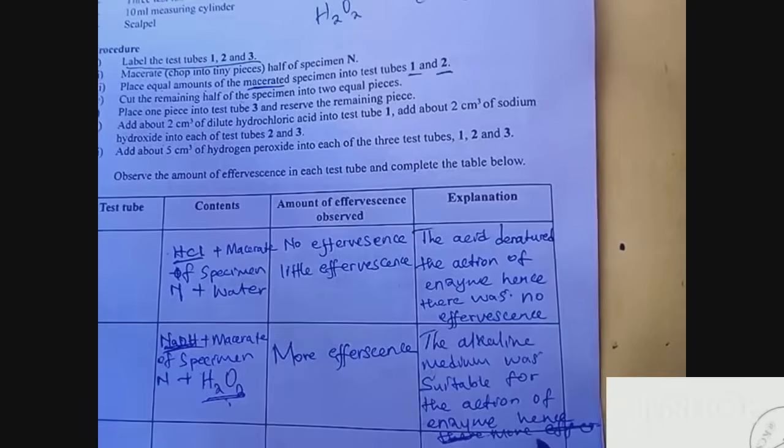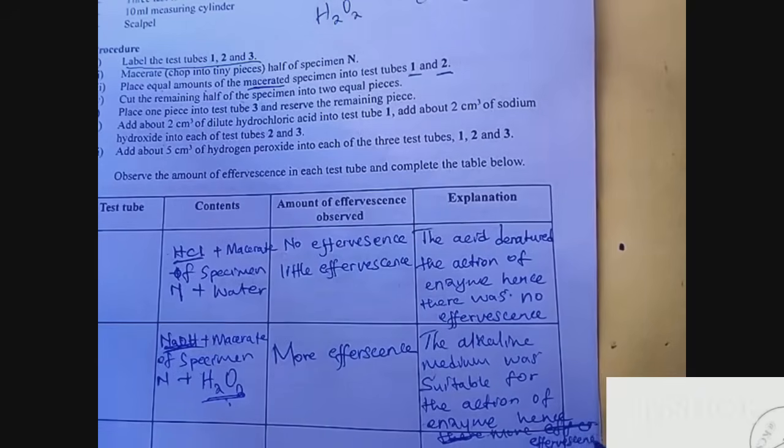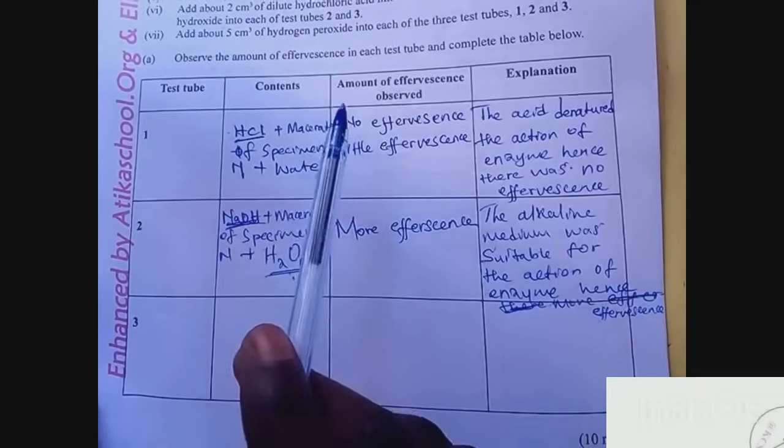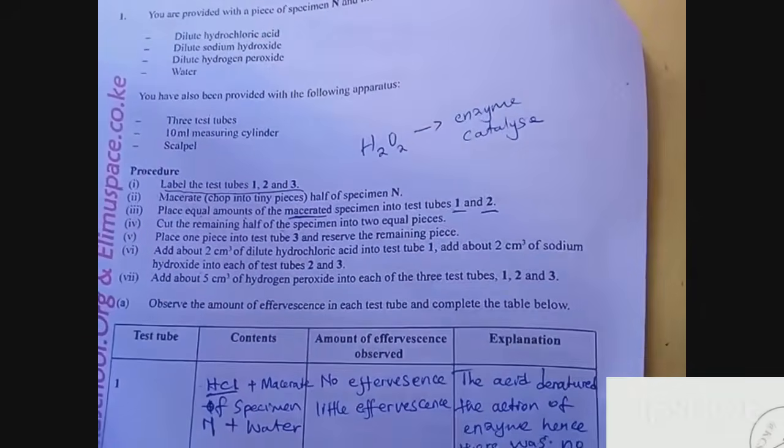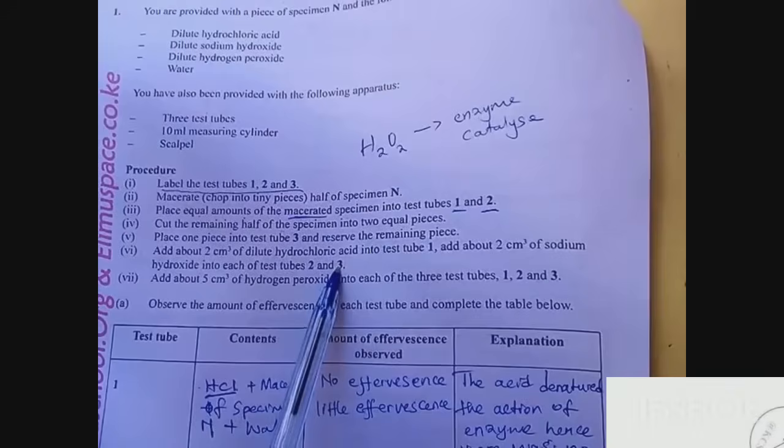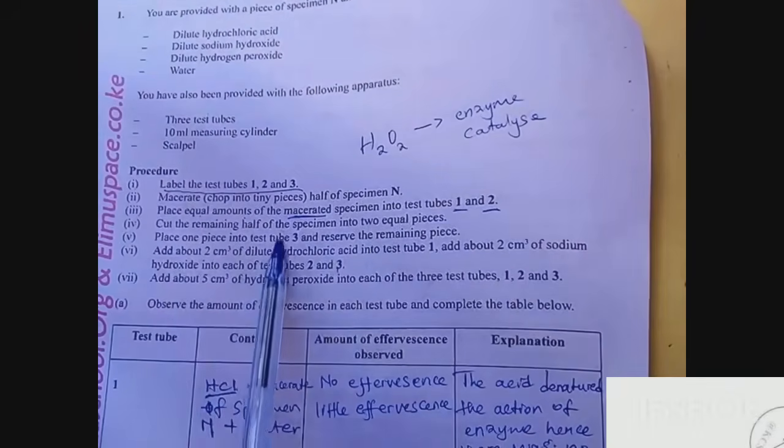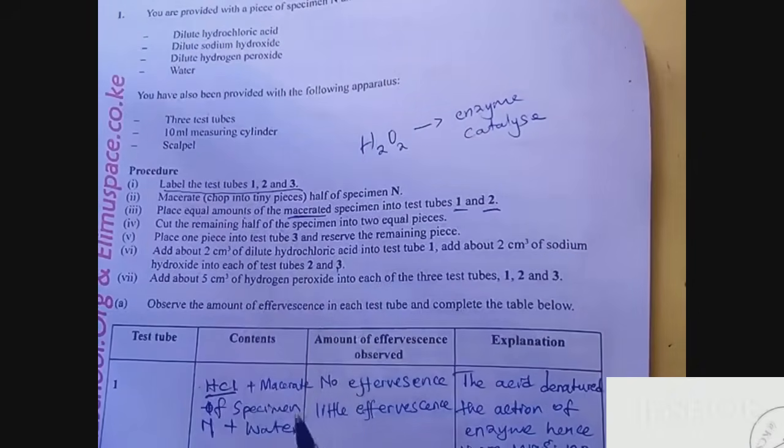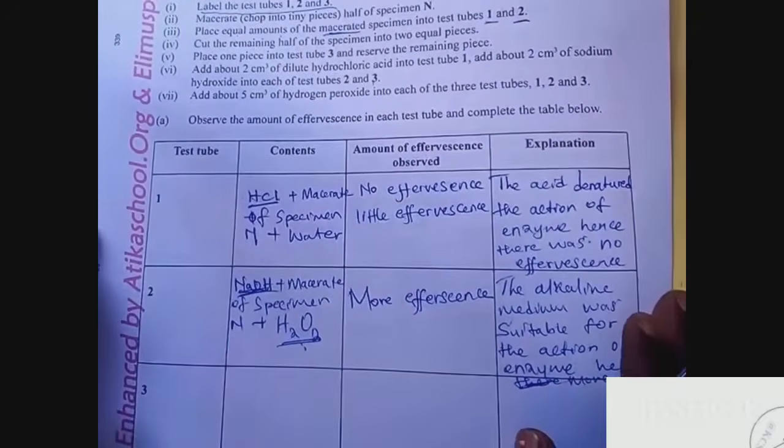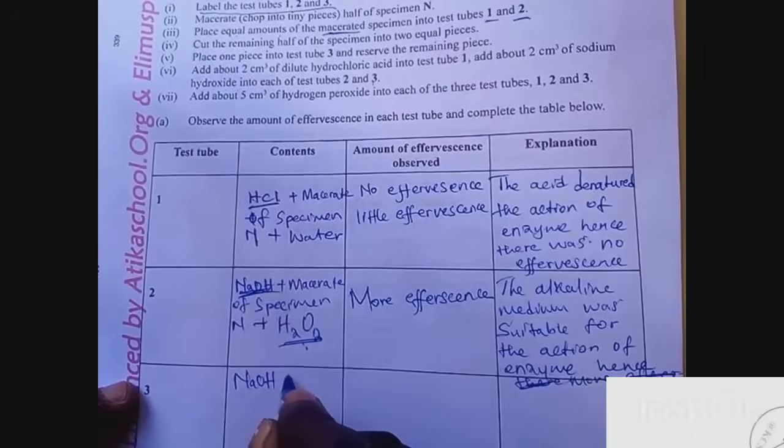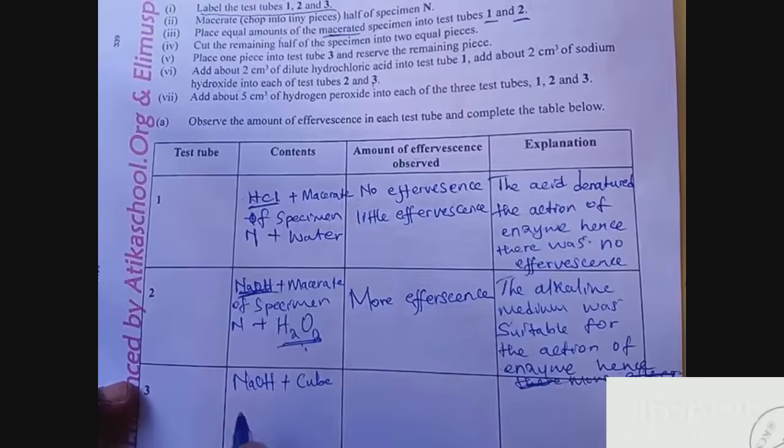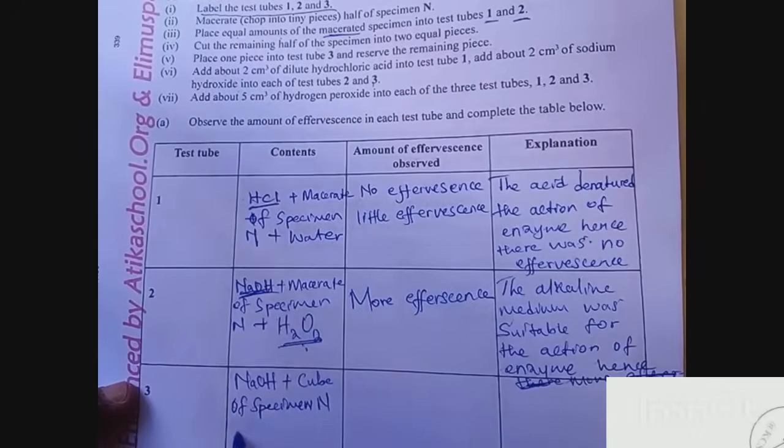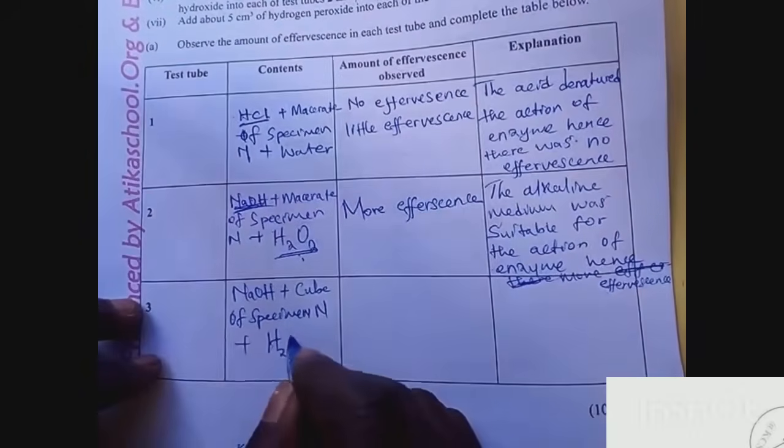Let's go to test tube 3. In test tube 3, you are told you add sodium hydroxide and then place one piece of the specimen in the test tube and reserve the remaining piece. The content in test tube 3 is sodium hydroxide plus a cube of specimen N and hydrogen peroxide.